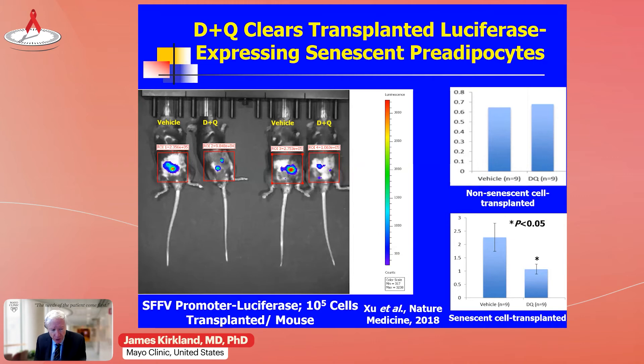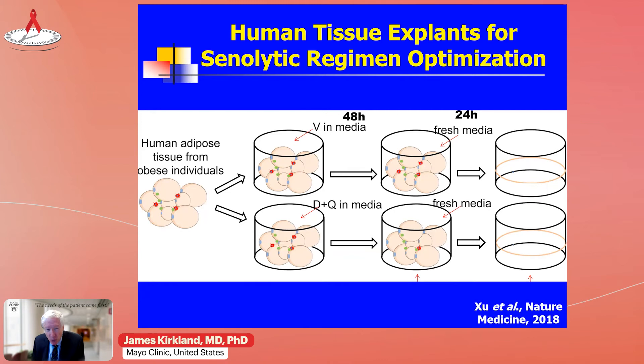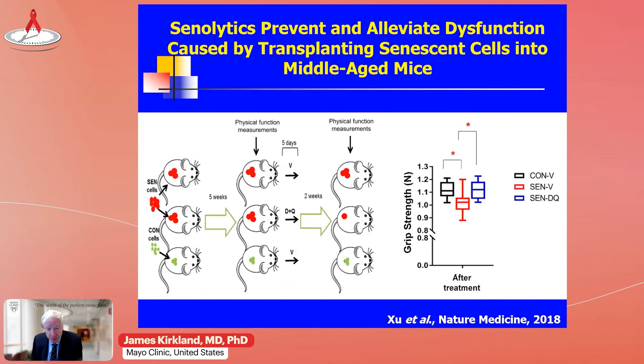If we transplant labeled senescent cells in mice so they emit a light signal so we can see them, and we give oral dasatinib and quercetin — just a single dose — we're able to kill the 30 to 70 percent of senescent cells that are tissue-damaging, whereas giving it to mice transplanted with non-senescent cells does not kill those cells. If we take human fat tissue from younger obese diabetic women who have a lot of senescent cells in their fat tissue and expose that tissue to senolytics for just two hours, that's sufficient to cause senescent cells to enter an irreversible process of apoptosis — which takes 18 hours to complete. So a very brief exposure is sufficient to kill senescent cells.